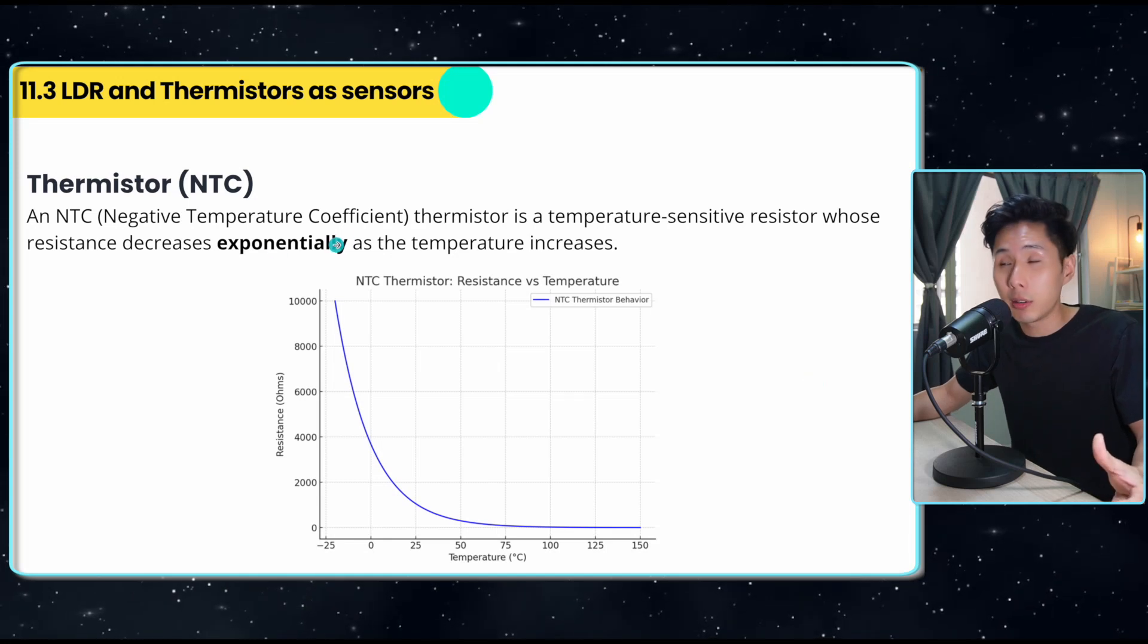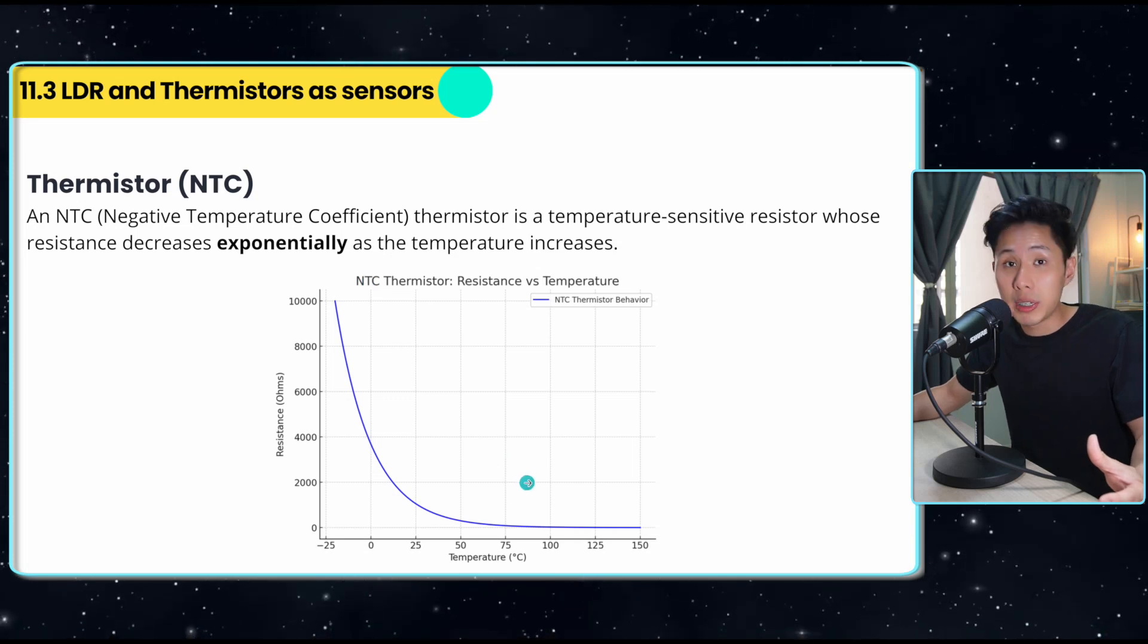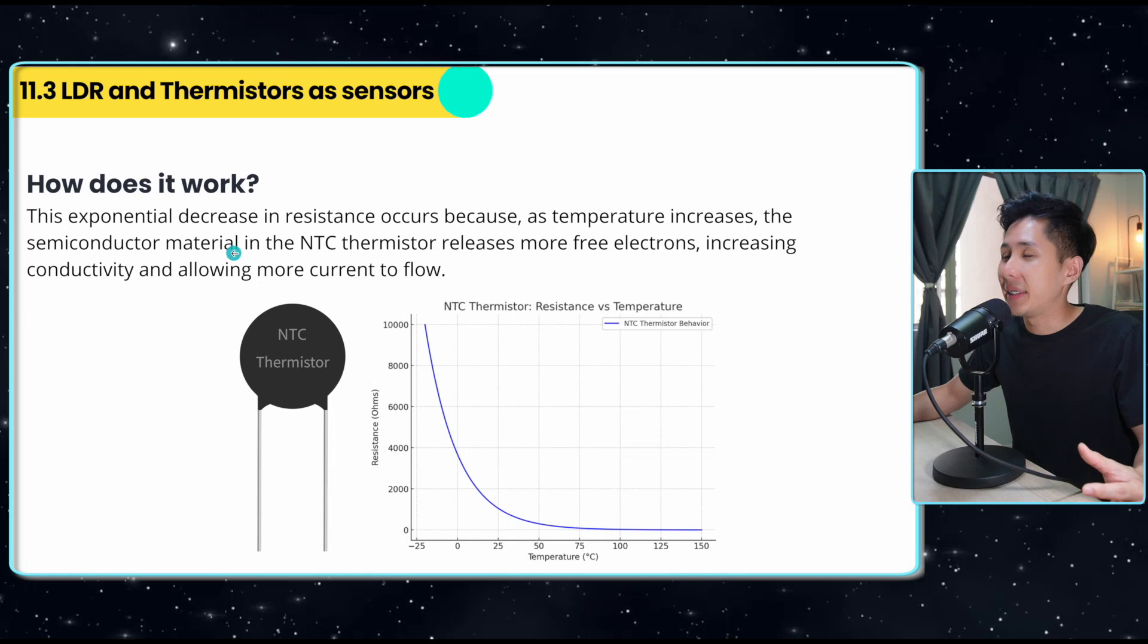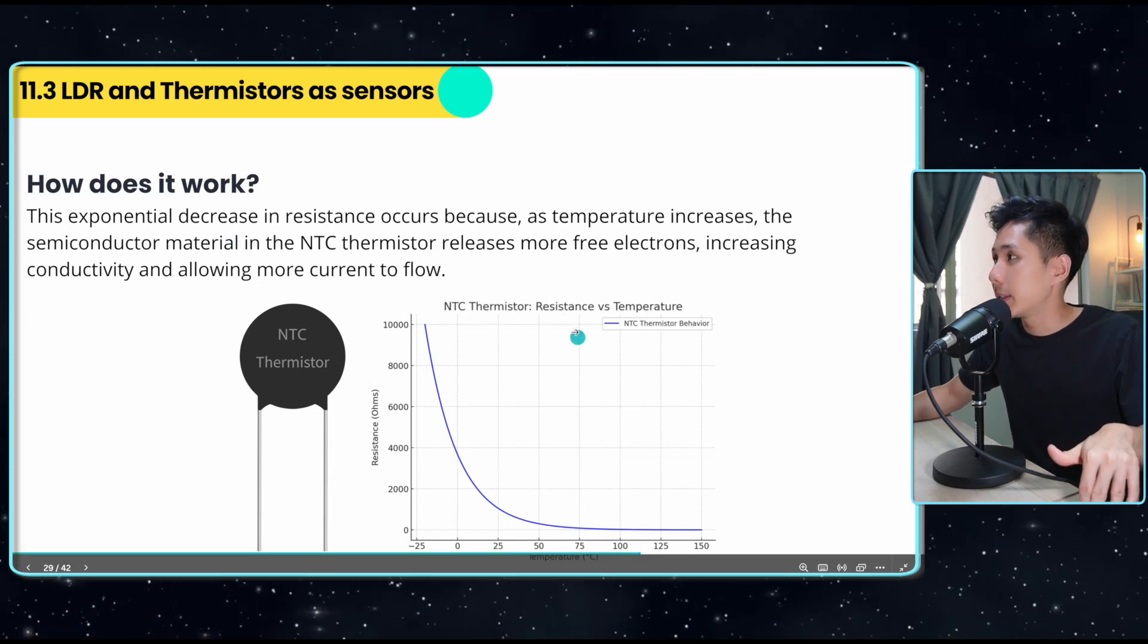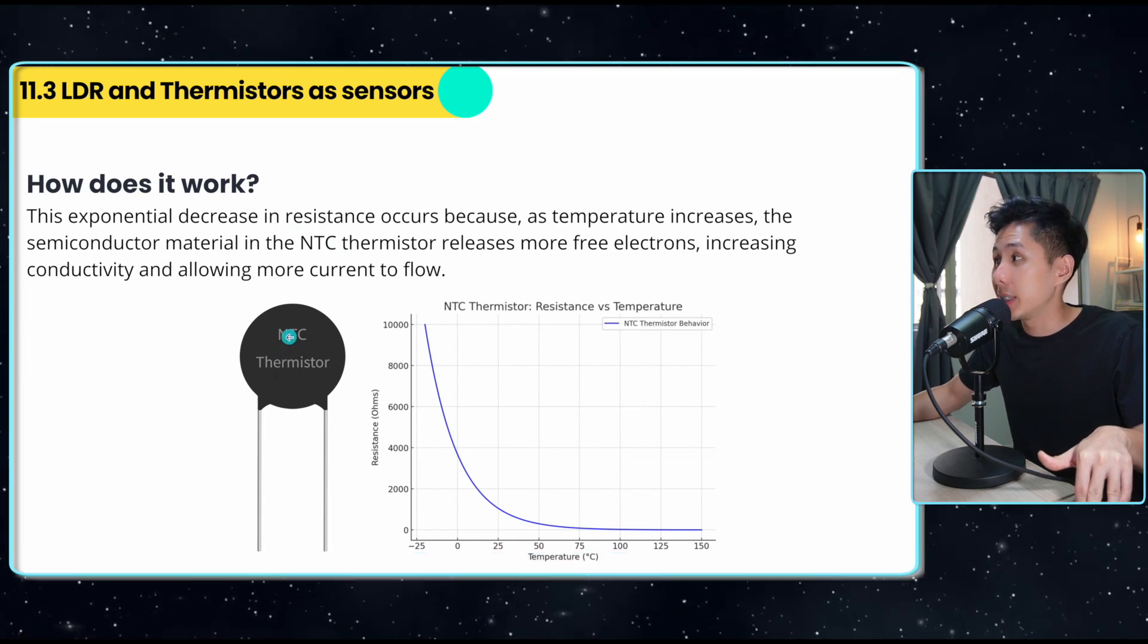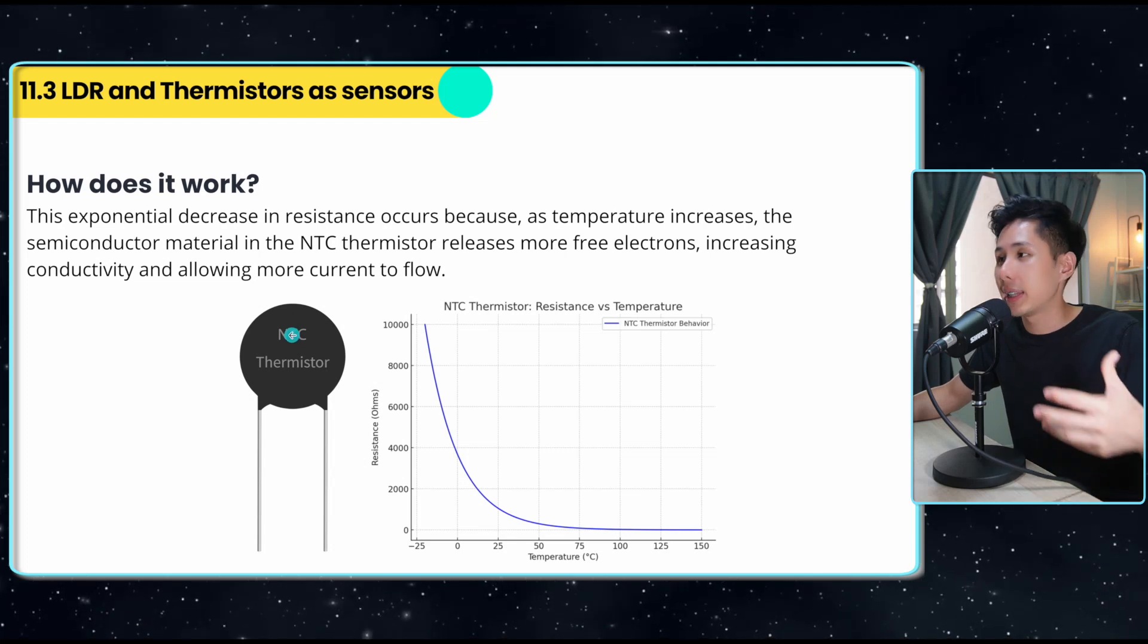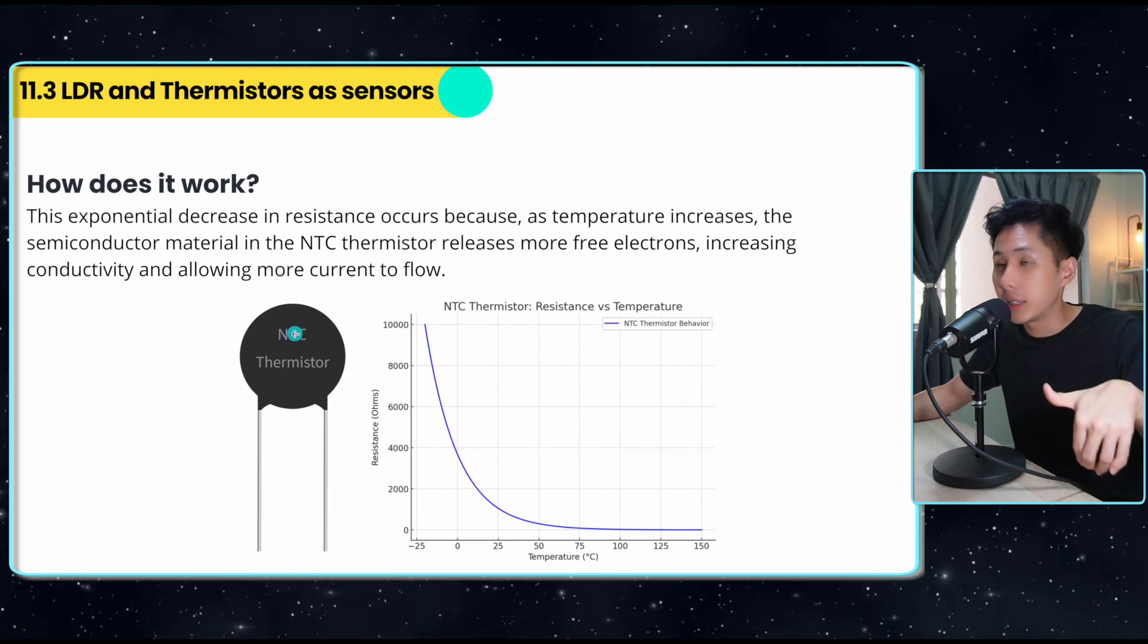Same goes for thermistor. Especially negative temperature coefficient, its resistance will decrease when temperature increases. This exponential decrease in resistance is due to the semiconductor material in the NTC releasing more electrons. When temperature increases, it releases more electrons, therefore more current flows and resistance decreases.